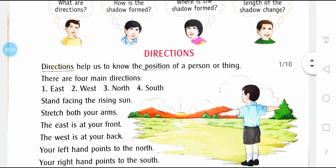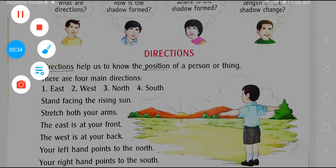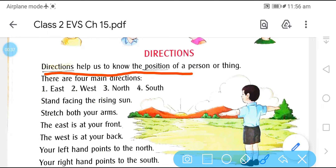The first topic is directions — directions means दिशाएं. Directions help us to know the position of a person or thing. किसी भी person या thing के position को बताता है direction. Direction से आपको पता चलेगा कि वो person किस position में खड़ा है. किसी सामान का भी position पता करने में direction help करता है.